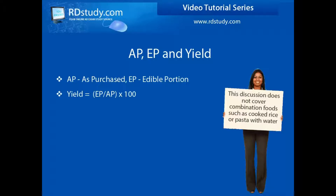Remember this important equation: yield is equal to the weight of the edible portion divided by the as purchased weight. Multiply by 100 to get the percentage value.